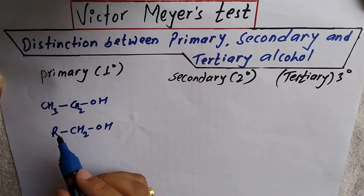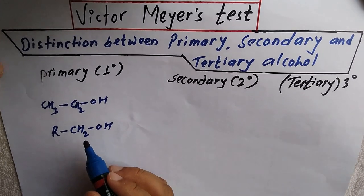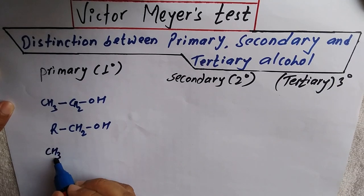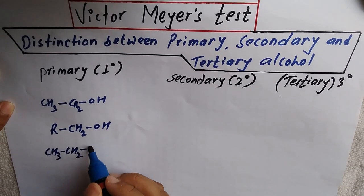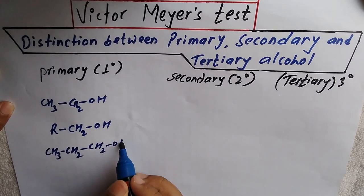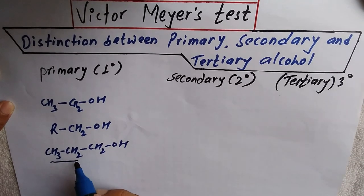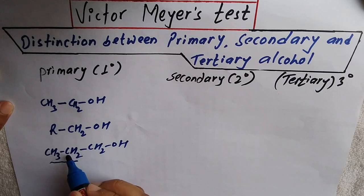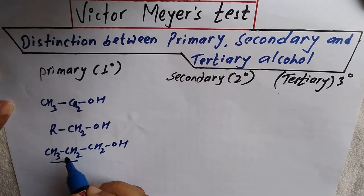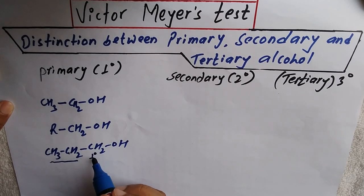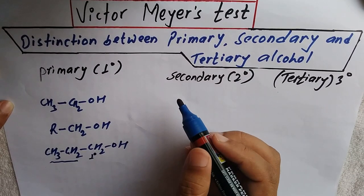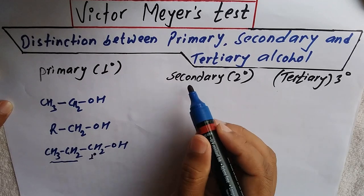We generally represent the alkyl group as R, so primary alcohol is represented as RCH₂OH, where R may be methyl, ethyl, propyl, etc. For example, if there is an ethyl group, you can write CH₃CH₂CH₂OH. The OH-bonded carbon is one degree, so it is called primary alcohol.